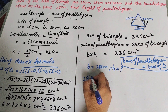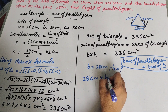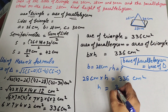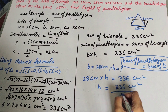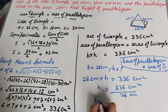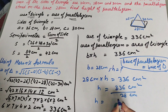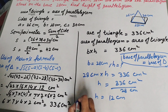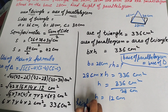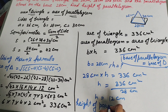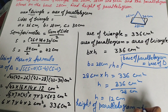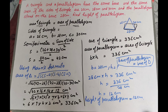Substituting into the formula: 28 cm × h = 336 cm², so h = 336 / 28 = 12 cm. Therefore, the height of the parallelogram equals 12 cm. Thanks for watching — like, comment, and share my video, and subscribe to my YouTube channel.